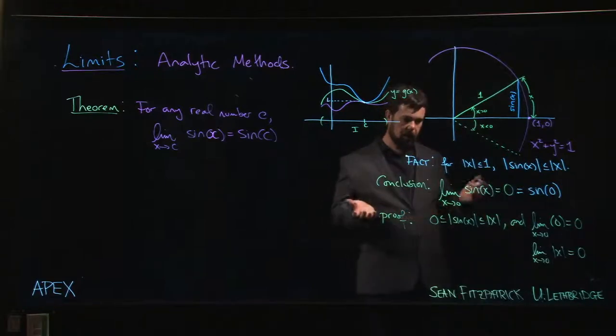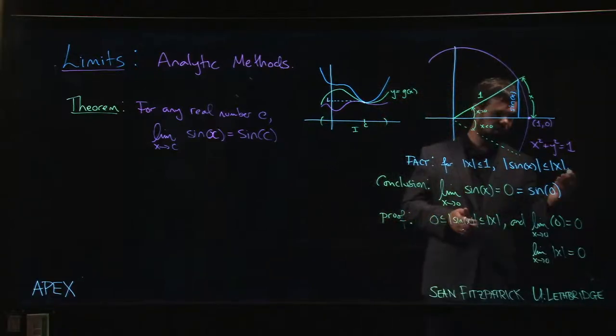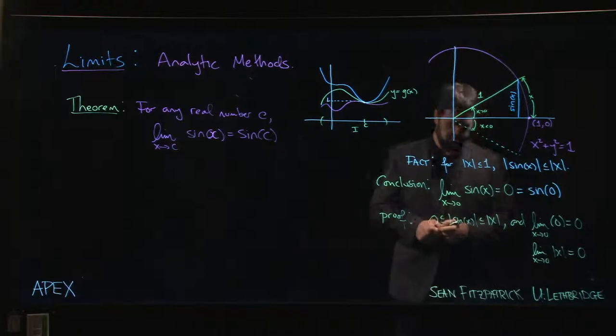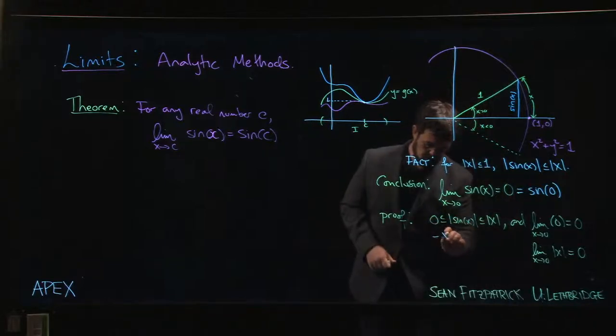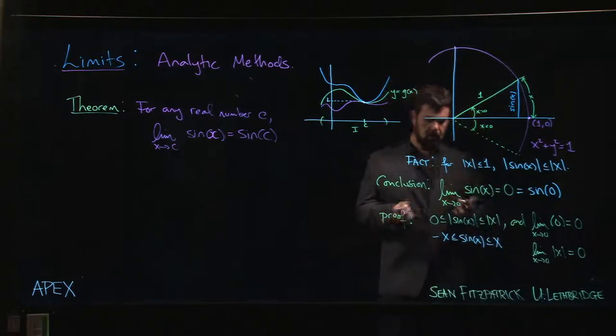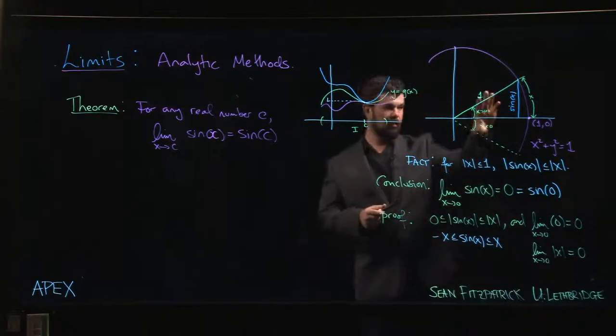So basically, the argument is that sine x is always less than x. If you want to dispense with absolute values, we could always put it this way. So sine x will always be between minus x and x for x in either the first or the fourth quadrants.